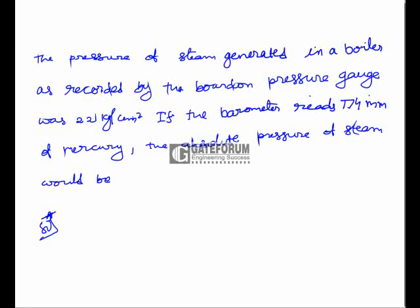The pressure of steam generated in a boiler as recorded by the Bourdon pressure gauge was 2.2 kg per centimeter square. If the barometer reads 774 mmHg, the absolute pressure of steam would be? Here, absolute pressure is the sum of atmospheric pressure and gauge pressure.